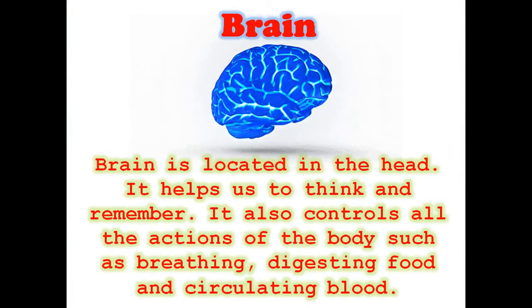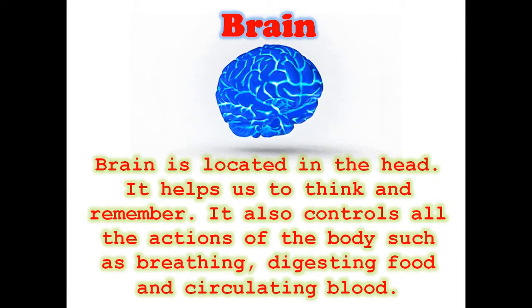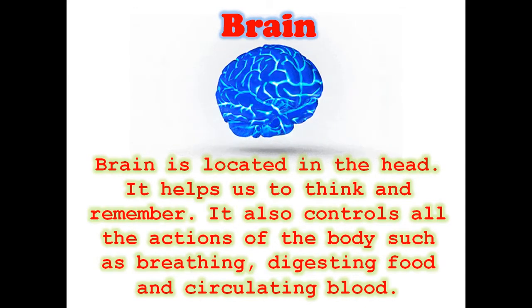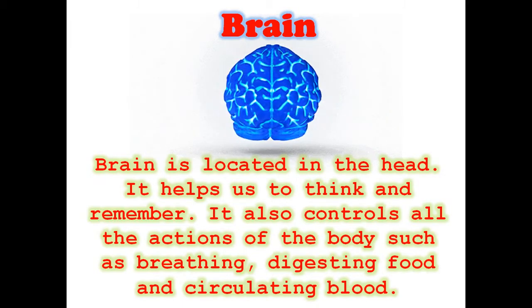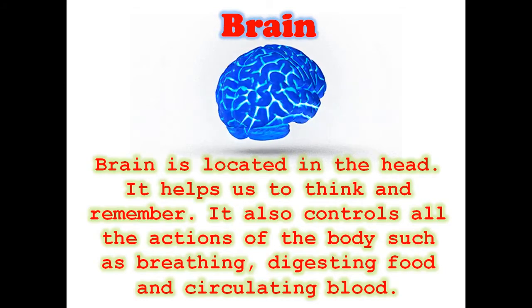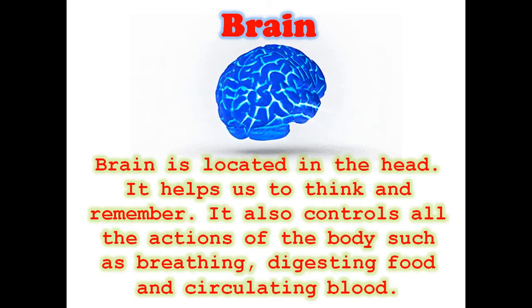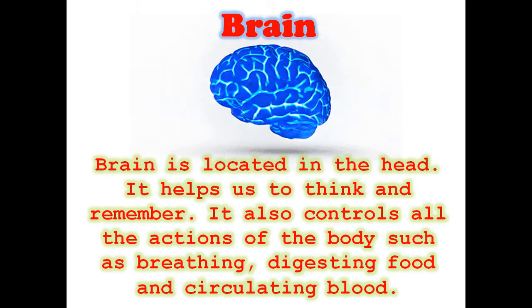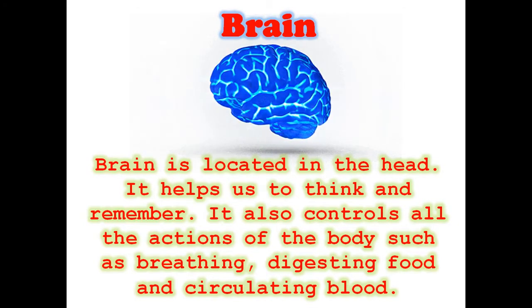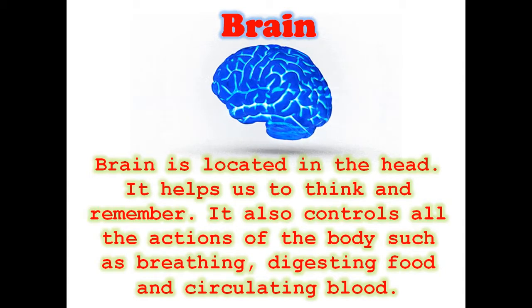The brain is located in the head. It helps us to think and remember. It also controls all the actions of the body such as breathing, digesting food and circulating blood. Our brain is protected by the skull. Whenever your father or mother is driving, they always wear a helmet — to protect the head and to protect the brain. If any accident happens, the helmet protects your head, because once your brain is damaged it cannot function.